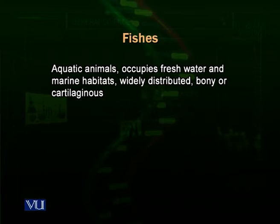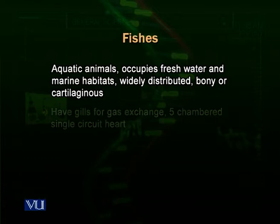Fishes are of two major kinds: they may be cartilaginous, having a softer skeleton, or they may be bony, having a harder bony skeleton. Fishes have some specific characteristics we can call adaptations. They have a two-chambered heart, which is a single circuit heart, because the heart pumps blood towards the gills and then towards the body, and then blood comes back to the heart.